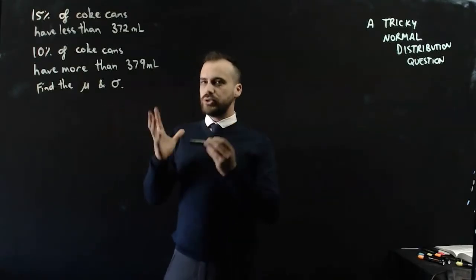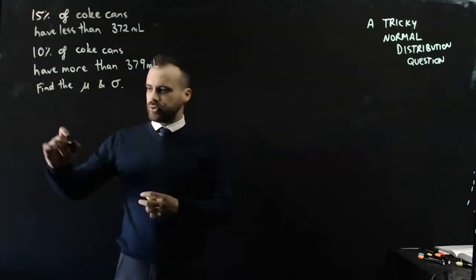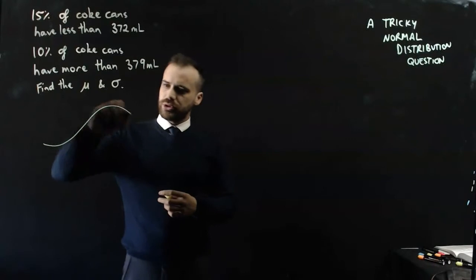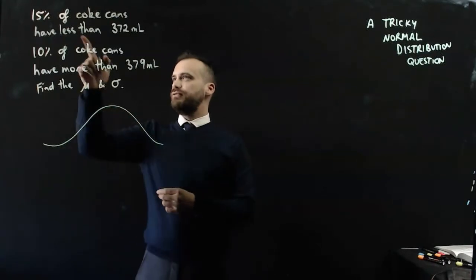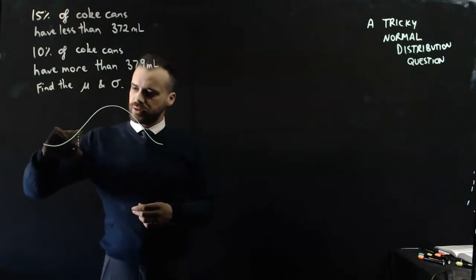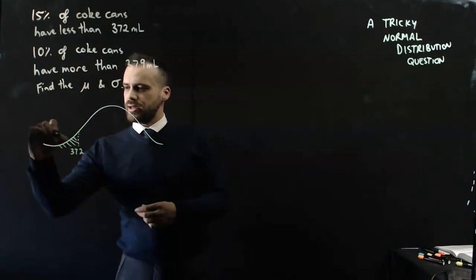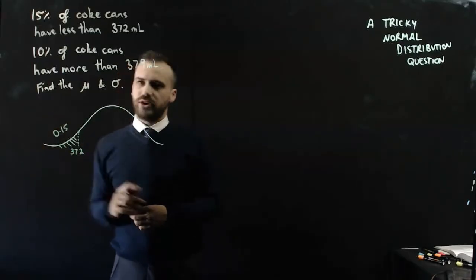I know quite a bit, but it also feels like I don't know enough at all. So I've got a normal distribution here. 15% of Coke cans are less than 372 ml. I'll put that in there, 372 ml, and this area here is going to be 0.15.